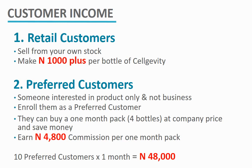The second customer income is the preferred customer income. Someone who is interested only in the product and not in the business can be enrolled as a preferred customer. These are customers that naturally buy products regularly — committed customers. Each time they go to the Max office in Lagos, Abuja, or Port Harcourt and buy products themselves, if they buy four bottles at 28,000 Naira, you earn an 8,800 Naira commission per pack. If you have 10 preferred customers buying four bottles each in a month, you can earn 48,000 Naira as commission.